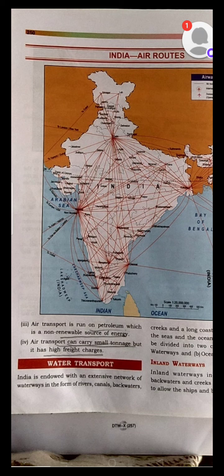Broad gauge was the distance between the rails of 1.67 meters and it connected all the major cities and ports of India. Then the meter gauge, the distance between the rails was 1 meter and it accounted for 7,180 kilometers throughout the nation.